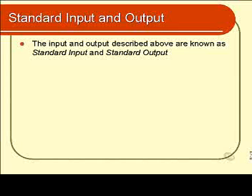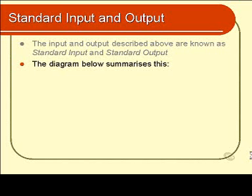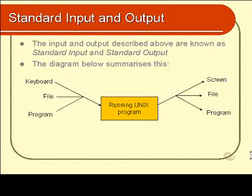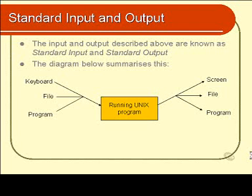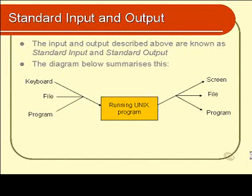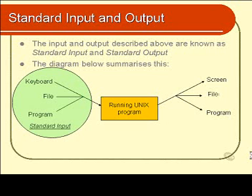The input and output shown in the last two modules is known as standard input and standard output — technical terms used in Unix. We have a diagram that summarises this. Any given Unix program can possibly produce output. That output will go to the screen unless it is redirected to a file or to a program. Similarly, input will come from the keyboard unless it is redirected from a file or from another running program. We call these standard input and standard output.